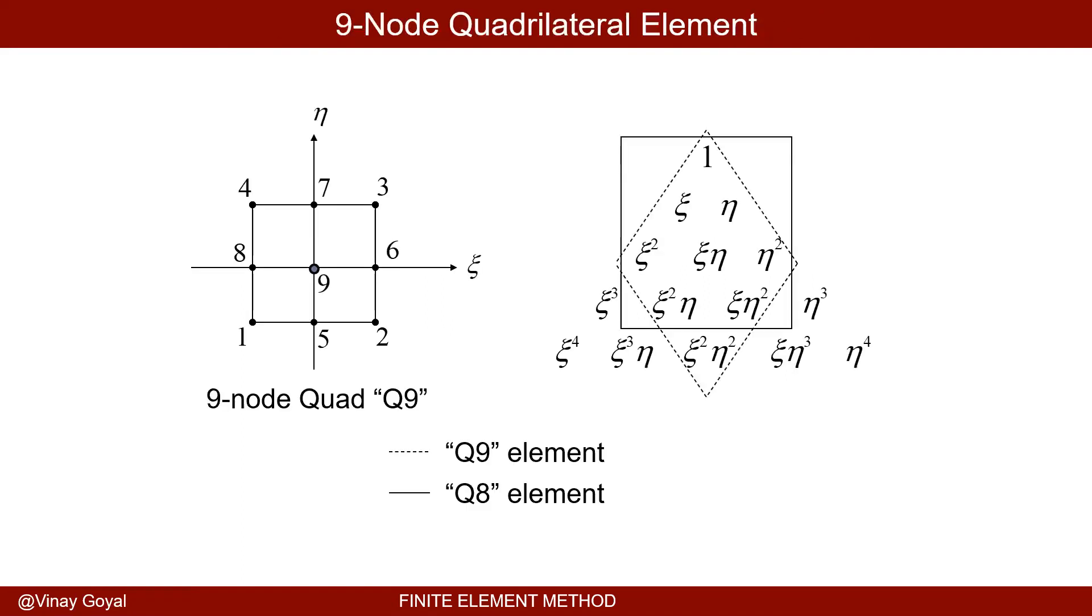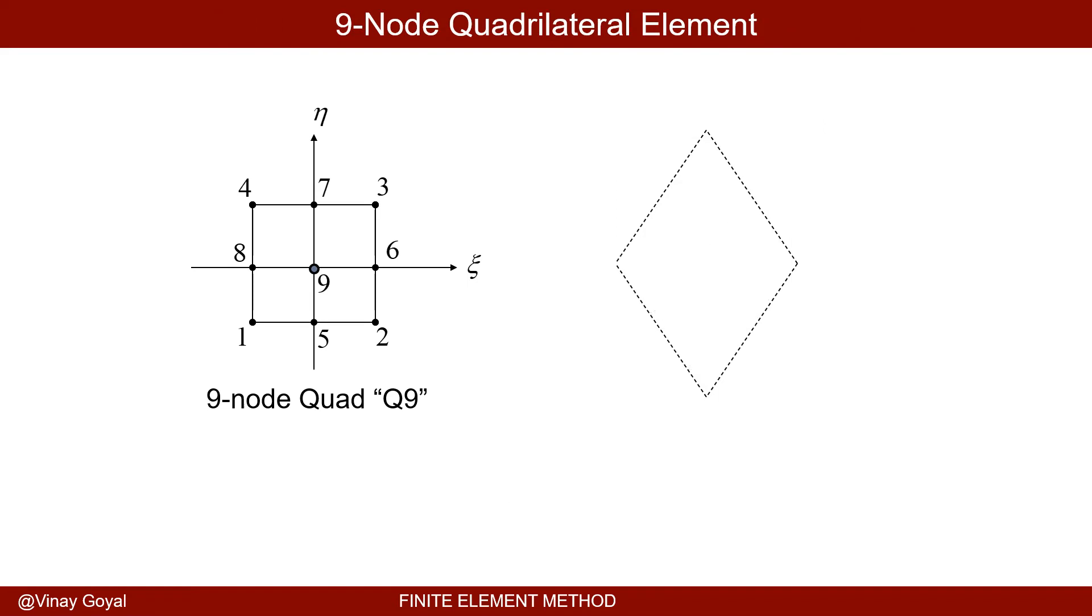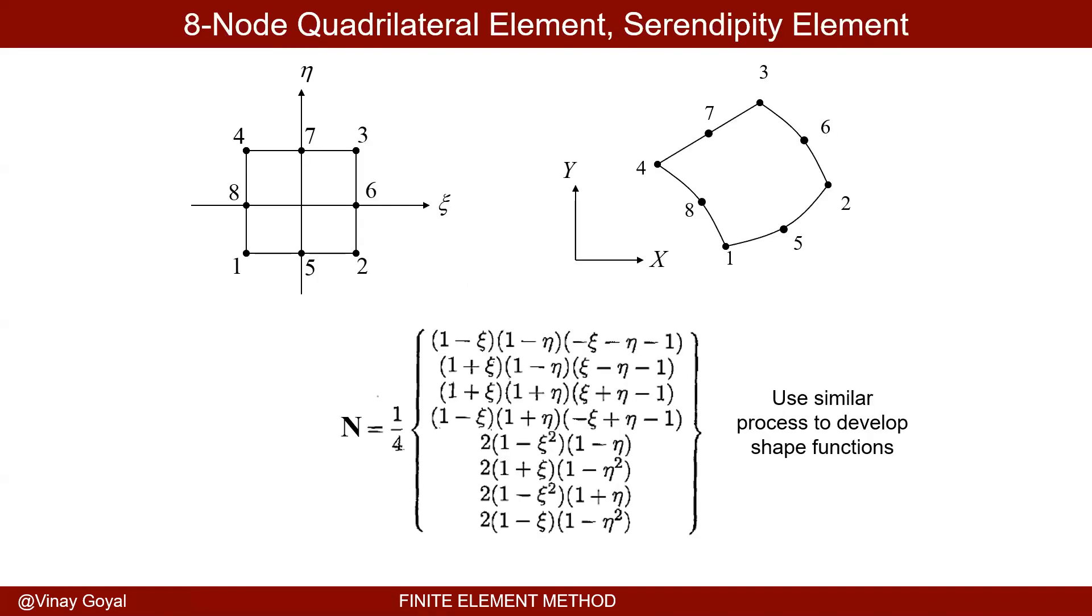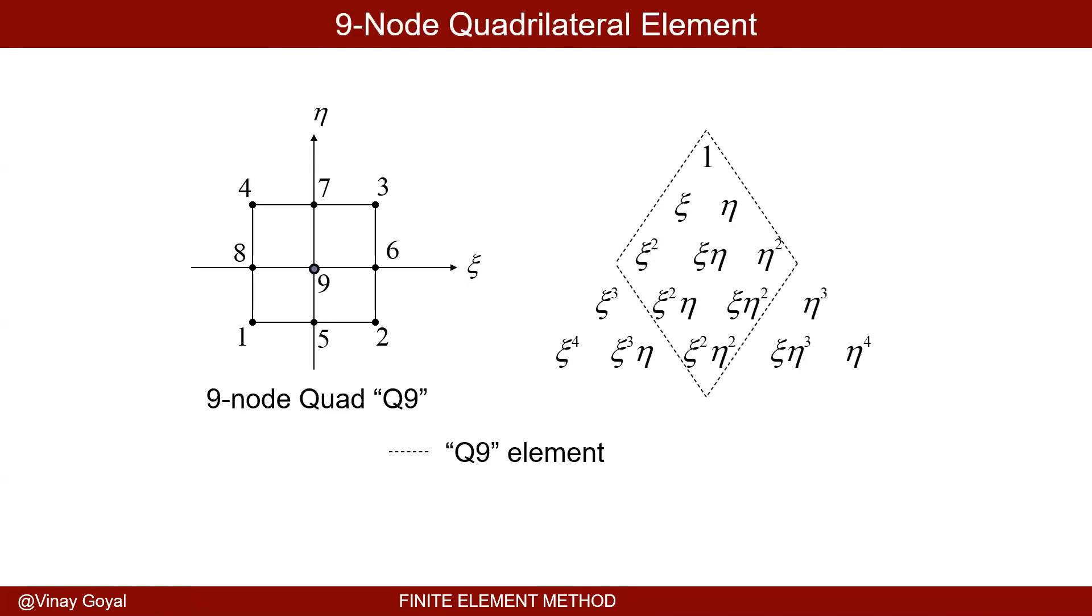There's another element called a Q9 element. So this is called a Q8 element because it has eight nodes. There's a Q9 element that has this middle node there. And to achieve that, you select this extra term. You can't select any of these other ones because it becomes biased.